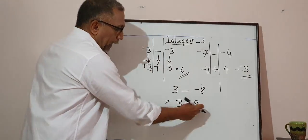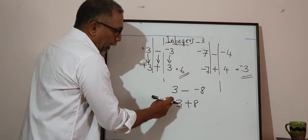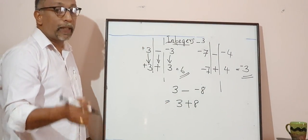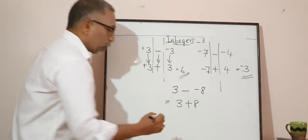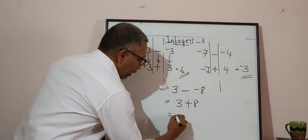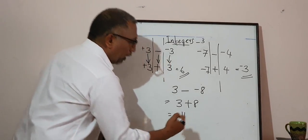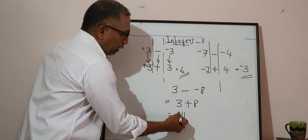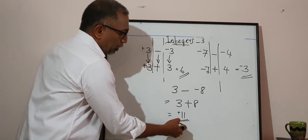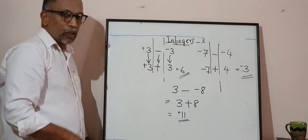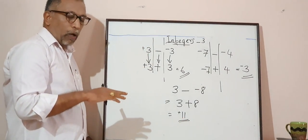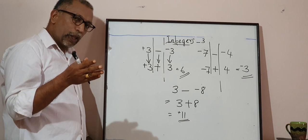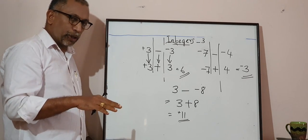So now we have 3 plus 8. Both numbers are positive — same sign means we add them: 3 plus 8 equals 11. Put the same positive sign. So the answer is positive 11. All subtraction questions can be converted into addition questions.